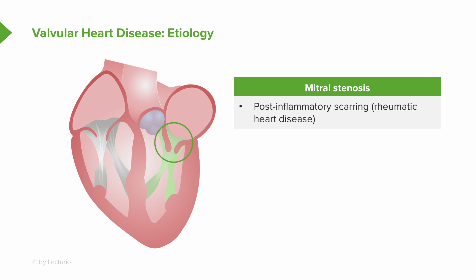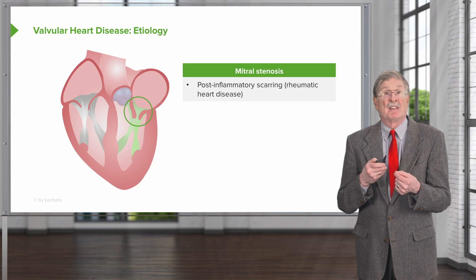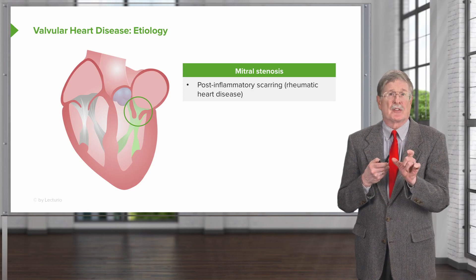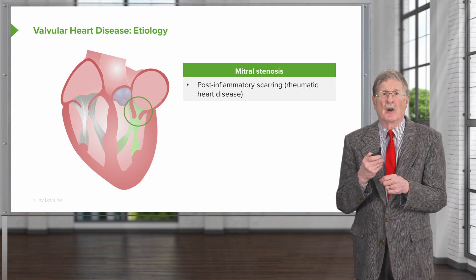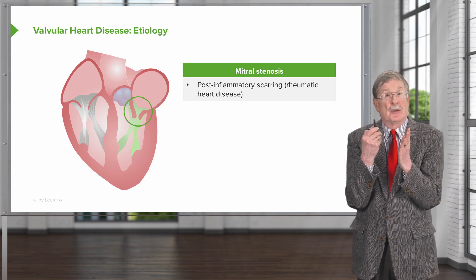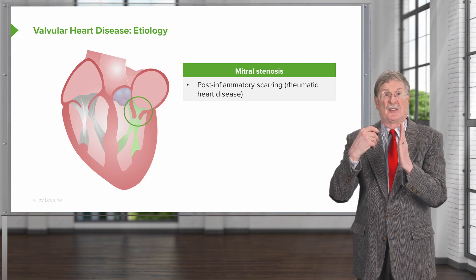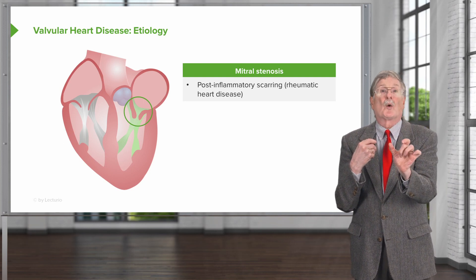Let's look at some of the etiologies of common valvular diseases. For mitral stenosis, 85% is due to rheumatic heart disease causing valvular fibrosis and valvular scarring. That post-inflammatory scarring is demonstrated here in the circle on the left — you can see that the valve leaflets are quite thickened and fibrotic and will become stiff, causing a degree of stenosis. Because they become so stiff, the valves can also become insufficient, and it affects not just the valve but also potentially the chordae tendineae.